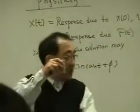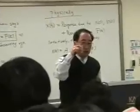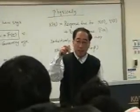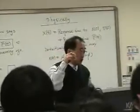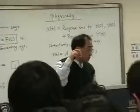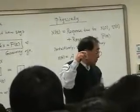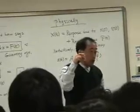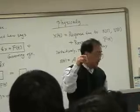If there is no initial displacement, if there is only initial displacement, the phi should be pi over 2. Sine theta plus pi over 2 is the cosine theta, right? Okay.